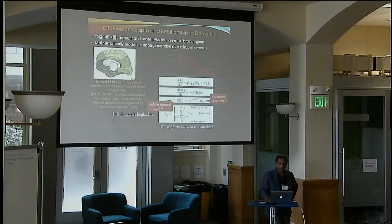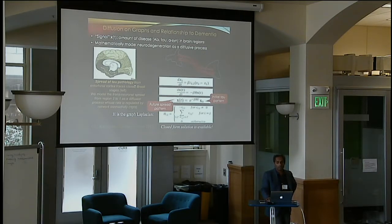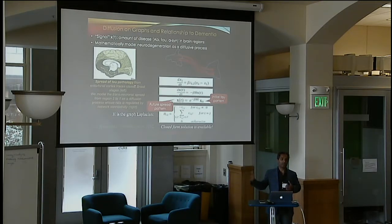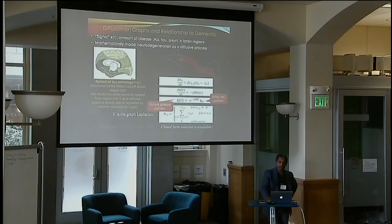Now we're ready to do some graph theory modeling. We assume the signal X is basically the concentration of the pathology. If you start with region 1, which is connected to region 2, how would it spread to the second region? We thought the simplest way is to model it with classical diffusion, which follows just two rules: the rate of diffusion depends on the concentration gradient between regions, and also the fatness of the pipe — which is exactly what the connectivity is between two regions. On top I'm showing the first-order diffusion equation, which is laughably simple.